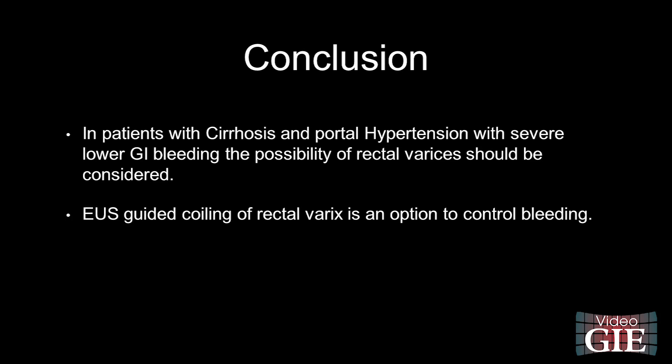Conclusion: In patients with cirrhosis and portal hypertension with severe lower GI bleeding, the possibility of rectal varices should be considered. EUS guided coiling of rectal varices is another option to control bleeding.